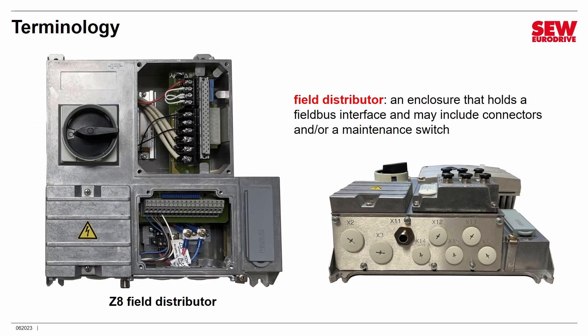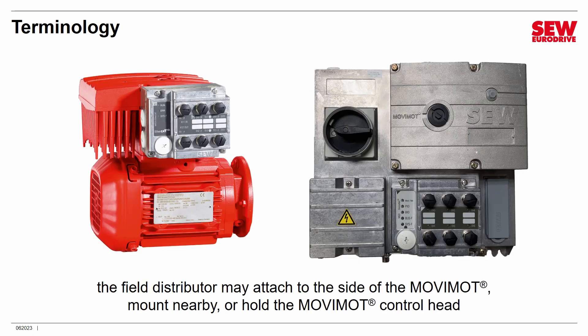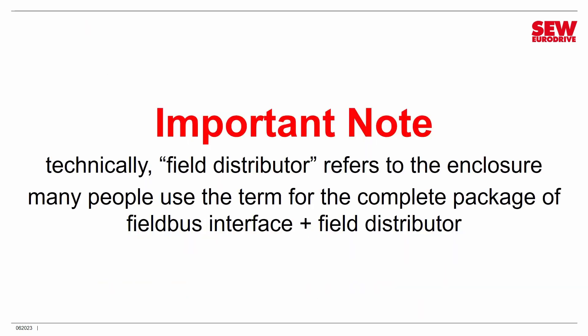Another term is field distributor. A field distributor is an enclosure that holds a field bus interface and may include connectors and/or a maintenance switch. This example is a model Z8 — you can see the connector in the lower right corner and the maintenance switch in the upper left. A field distributor may attach directly to the side of the Movimod, mount near it, or hold the Movimod's control head within it. Note that technically the term field distributor refers just to the enclosure, but many people use it for the complete package — the field bus interface plus the enclosure — and that's how I'll use it throughout this class.